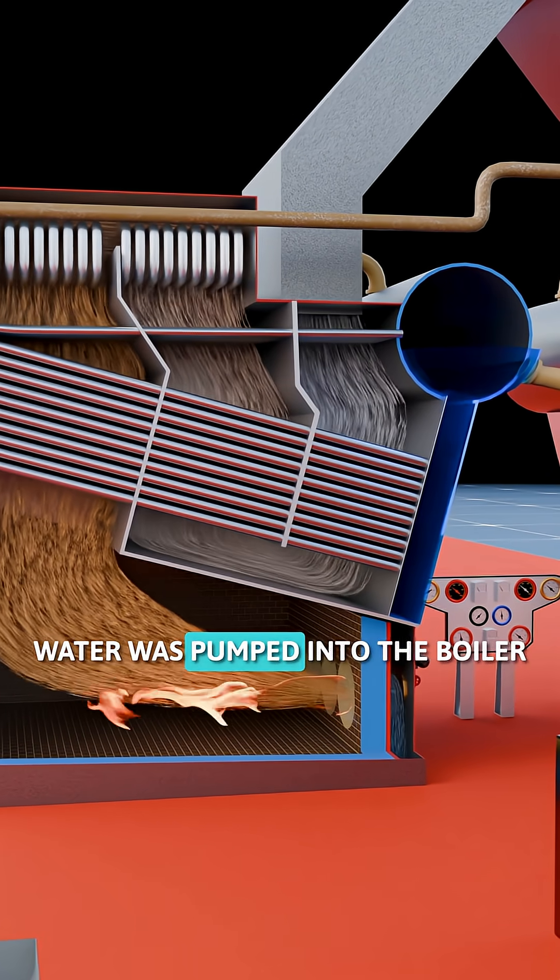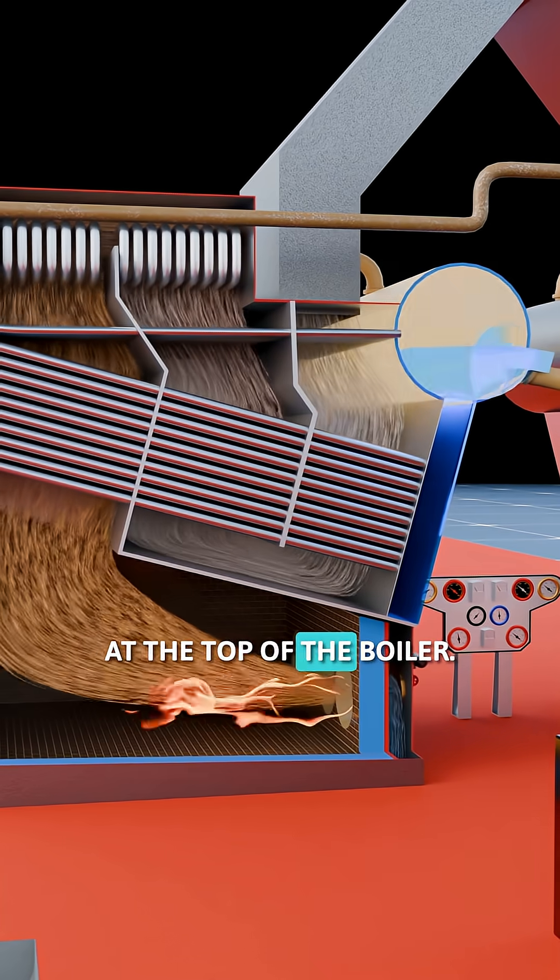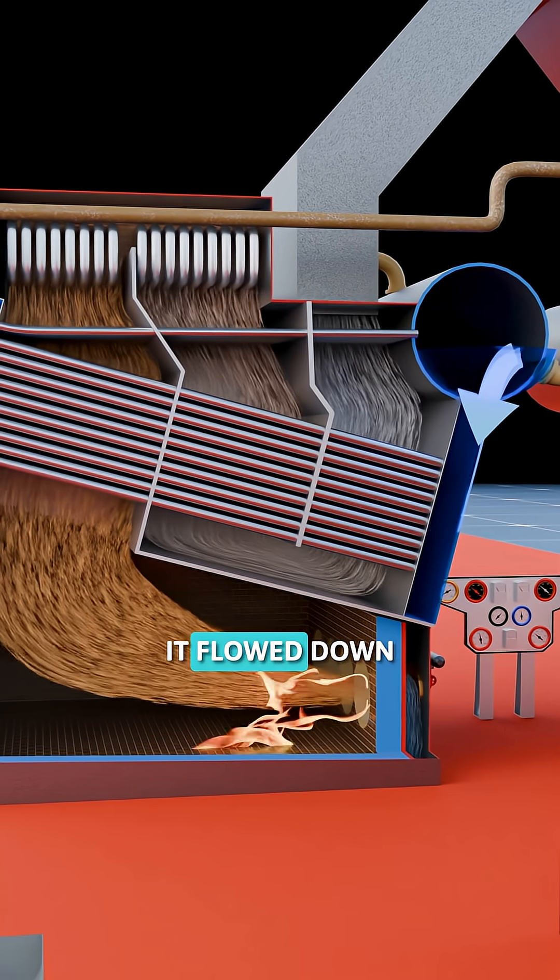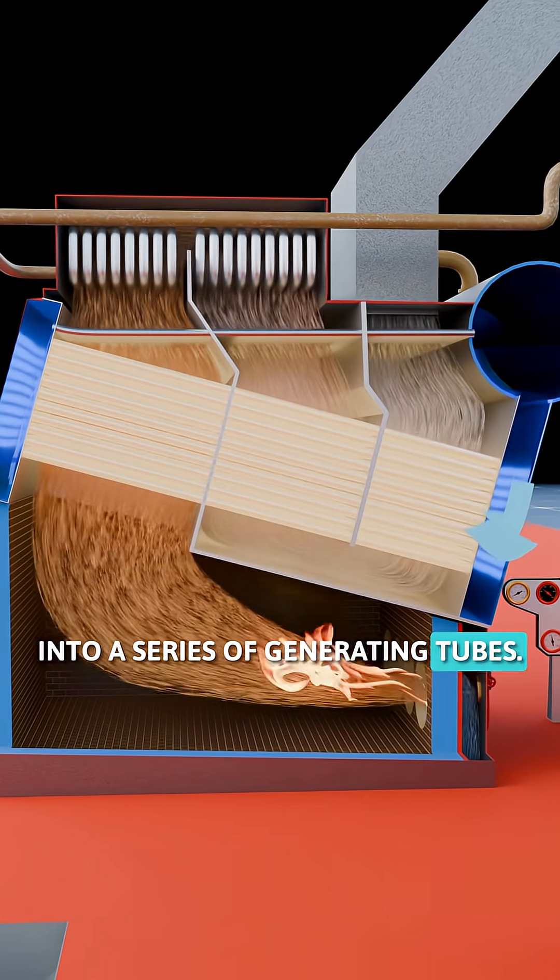Feed water was pumped into the boiler by a feed pump and entered through the steam drum at the top of the boiler. From there it flowed down into the front header, which distributed it into a series of generating tubes.